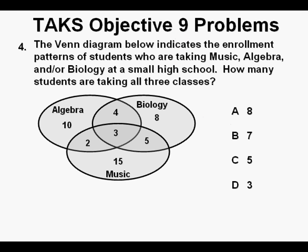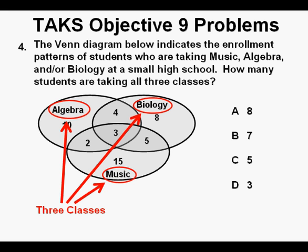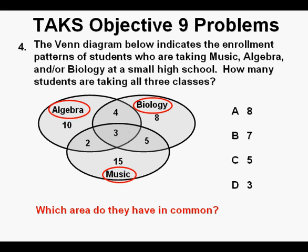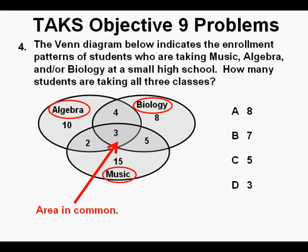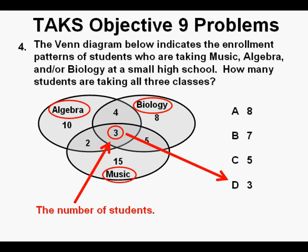Problem 4. The Venn diagram below indicates the enrollment patterns of students taking music, algebra, and/or biology at a small high school. How many students are taking all three classes? We have ellipses representing enrollment in music, algebra, and biology. To find students taking all three classes, we look for where all three ellipses overlap — the area in the middle of the diagram. That number of students is three. We find three amongst the answer choices, so we circle our correct answer D.